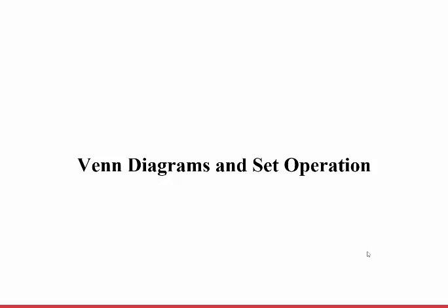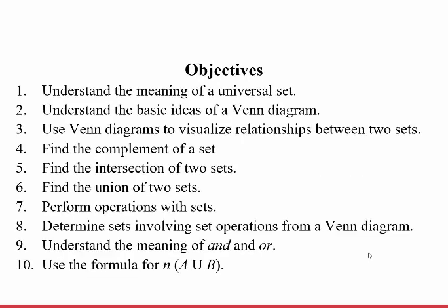Now this lecture is a little bit long and we have a lot to cover. Here are all the objectives: we want to understand the meaning of the universal set, understand the basic idea of Venn diagrams, use Venn diagrams to visualize relationships between two sets, find the complement of a set, find the intersection and union of two sets, perform operations with sets, and determine sets involving set operations from Venn diagrams. We also want to understand the meaning of 'and' and 'or' as they relate to sets.